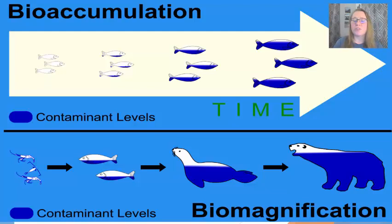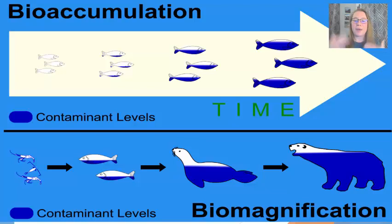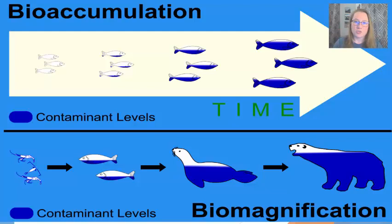Here's another way to look at it. With bioaccumulation we have three fish, and over time each individual accumulates more and more of the pollutant in its body. Whereas biomagnification is as you move up the food chain, that concentration is going to increase at each trophic level.